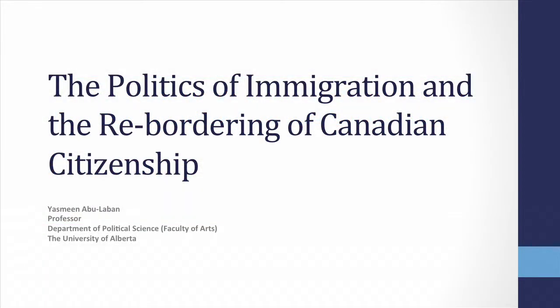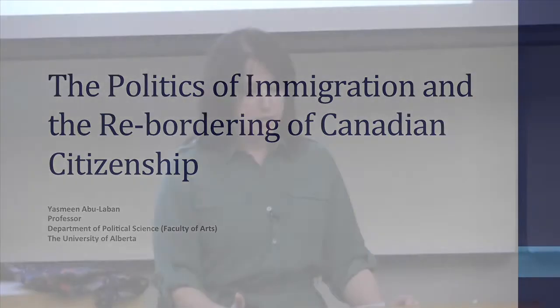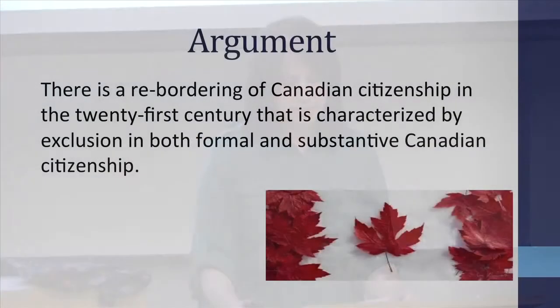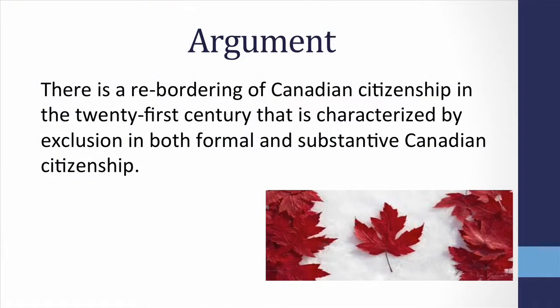When political scientists think about borders or border studies, they're likely to immediately gravitate to major orienting concepts for the discipline, like the nation state and citizenship. In my talk today, I'll look at both formal and substantive Canadian citizenship. What I argue is that since 2000, we've been seeing ways in which, in both areas, there's a rebordering of Canadian citizenship occurring in exclusionary directions.